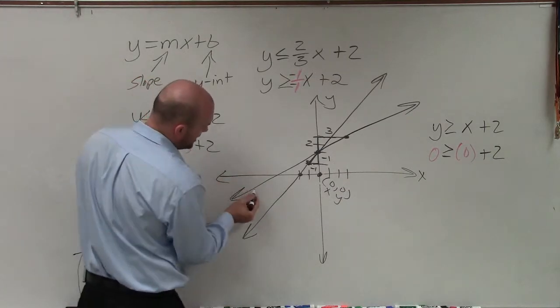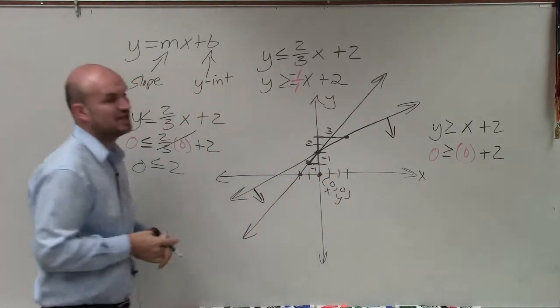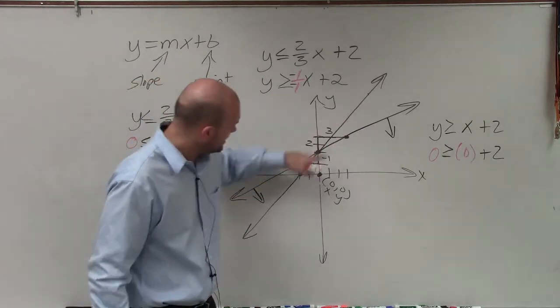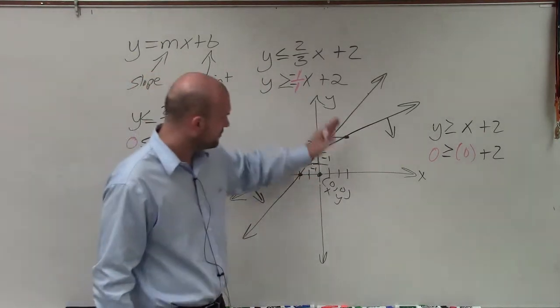So therefore, I am going to shade down, oops, this one over here. I'm going to shade below this line, because for this boundary line, the test point (0, 0) makes the inequality true. So therefore, we're going to shade down below.